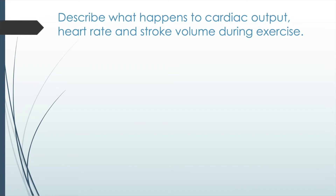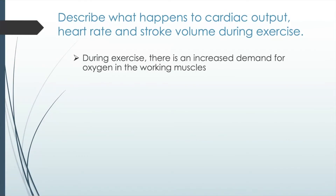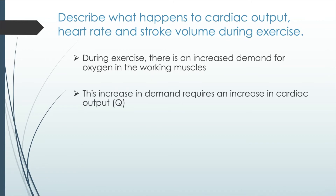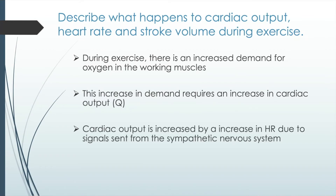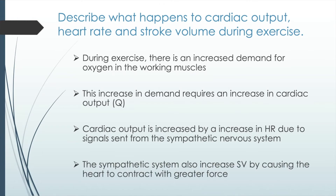During exercise, working muscles require more oxygen. Since oxygen is transported in red blood cells, we need more blood pumping around the body, so cardiac output must increase. Using the equation, we can increase cardiac output by increasing heart rate, increasing stroke volume, or both. The sympathetic nervous system causes both to happen — it increases heart rate and causes the heart to contract with greater force, thereby increasing stroke volume.